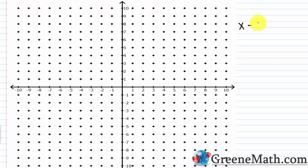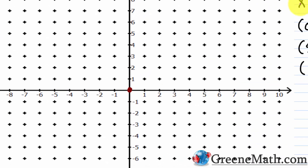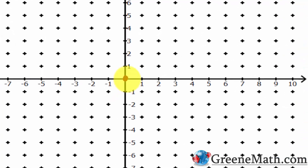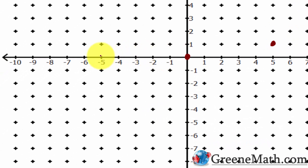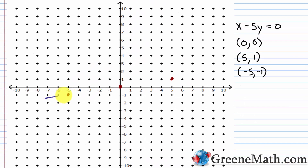Working with x minus 5y equals 0, my points are (0, 0), (5, 1), and (-5, -1). I plot the origin, then (5, 1) at 5 on the x-axis and 1 on the y-axis, and (-5, -1) at negative 5 over and down 1. I connect them to graph the line and put arrows at each end to show it continues indefinitely in both directions.